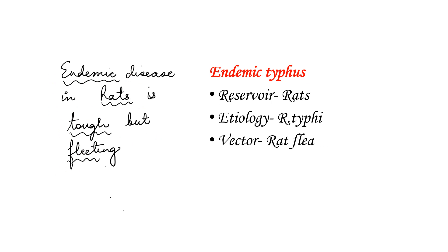The second mnemonic is: 'Endemic disease in rats is tough but fleeting.' So for endemic typhus, the reservoir is rats, the etiological agent is Rickettsia typhi — 'tough' for typhi — and the vector is rat flea, remembered by the word 'fleeting.'